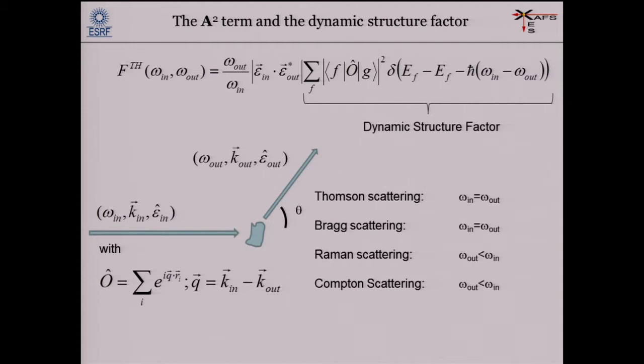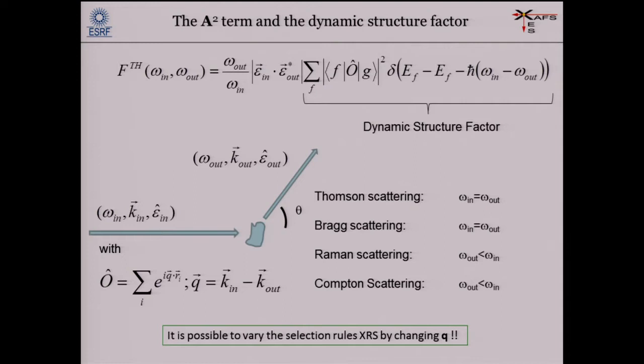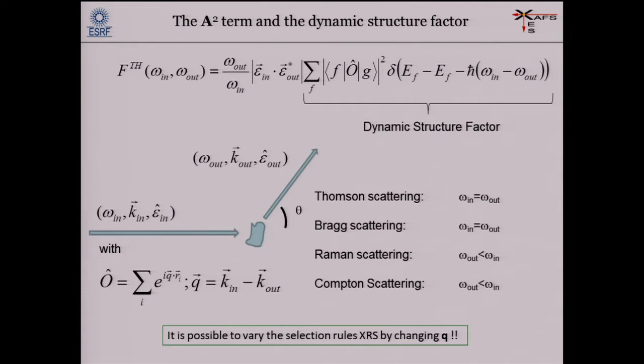Now we worry about this operator connecting ground state with final state. It contains the momentum transfer — a very interesting phenomenon. By varying the momentum transfer, I can change the selection rules and transition matrix element by varying the scattering angle. This technique is called X-ray Raman scattering.